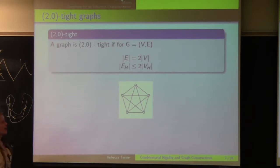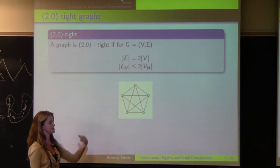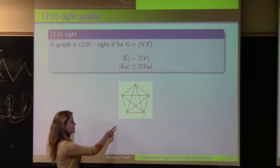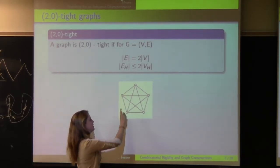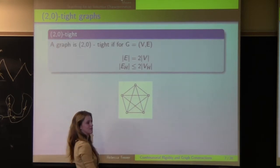So for example, if we take K5, we have 5 vertices and 10 edges. So the first property is preserved. As well for any subgraph, like let's say for example we take the triangle, we have 3 vertices and 3 edges. So the number of edges is less than or equal to 2 times the number of vertices.